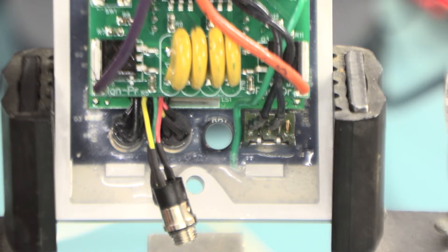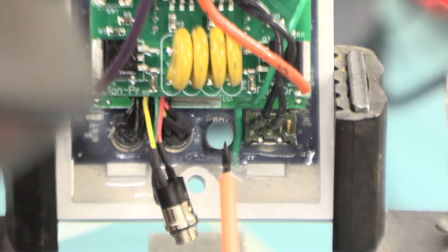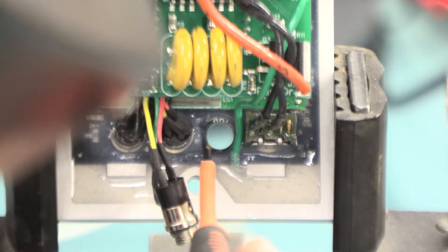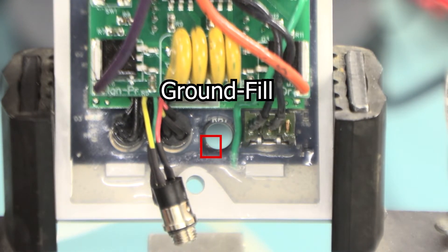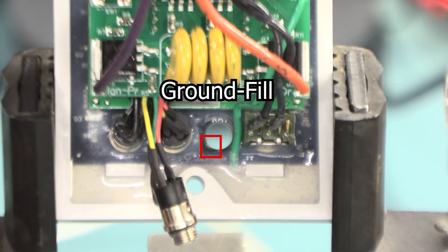And I started looking at it, and if you can see, I'll try not to get my big fat head in the way of the shot. But if you can see right there, there's a shiny, kind of copper-looking piece right there. And that's actually a trace that's around this connector right here. The manufacturer builds it.